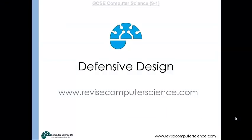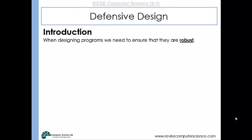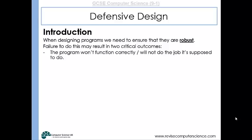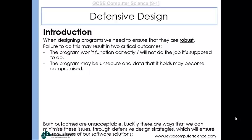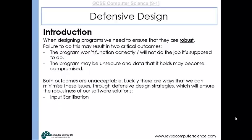This video is about defensive design. When you're designing a program you have to make sure that they are robust. There are two critical outcomes that could happen if they are not written robustly: the program might not function properly, and the program might become unsecure — the data that it holds might become compromised. Both of these things are completely unacceptable. But there are some defensive design strategies that we can employ, and we'll have a look at some of those over the next few slides.